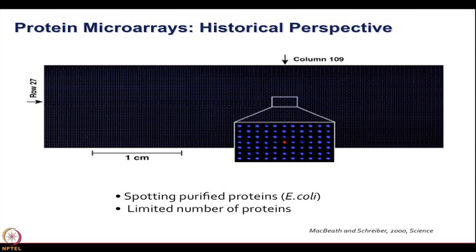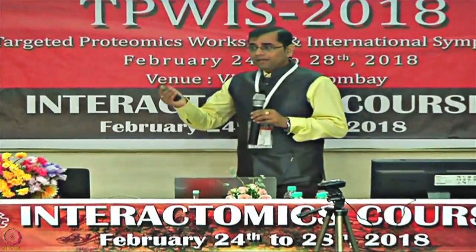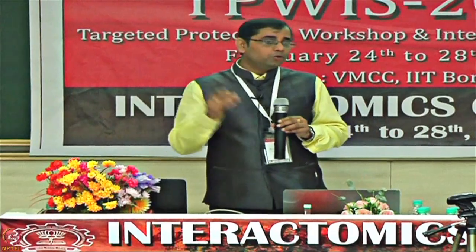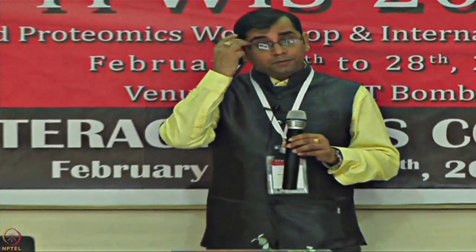Many people who had access to clones with expression vectors started purifying proteins, and those who already had access to pure proteins started printing them on chips. From 2000 to 2005, many good papers in Nature and Science came out, especially from Mike Schneider's lab. When they had access to many yeast proteins, they printed 5,600 yeast proteins on a chip and then did interaction studies on those. This concept brought forward many scientists and approaches showing that high throughput screening for proteins was now possible, and many assays could be done on the chip itself.